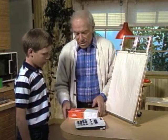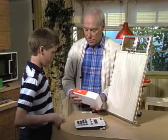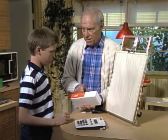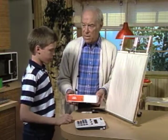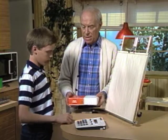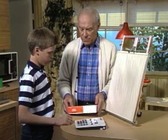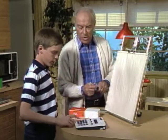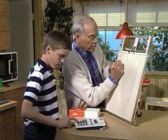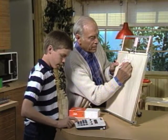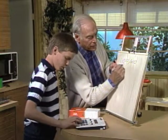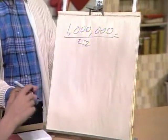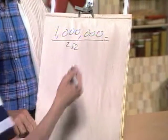Here is a box of sugar cubes — see how many are in there? 252 cubes. Now, to find out how many boxes would make a million, we divide one million by 252. One million divided by 252 equals 3,968.